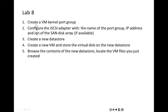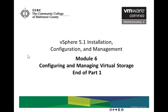In this lab, you will: using the vSphere client, create a VMkernel port group; configure the iSCSI adapter by clicking add, specifying the port group name, IP address, and iSCSI qualified name of the disk array (if your lab has one); create a new datastore on that disk array; create a new virtual machine and store its hard disk on the new datastore; and then browse the contents of the new datastore to locate the virtual machine files you just created. This concludes part one.